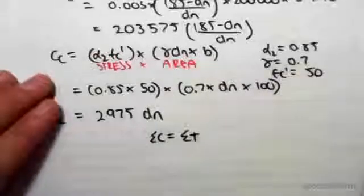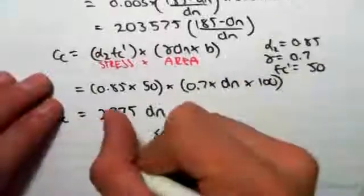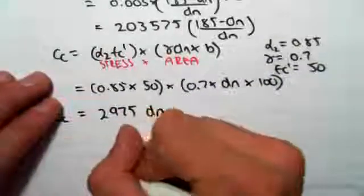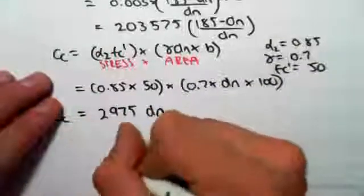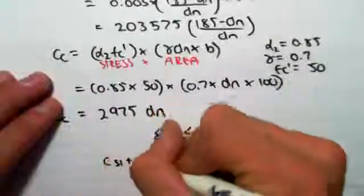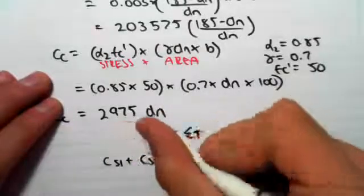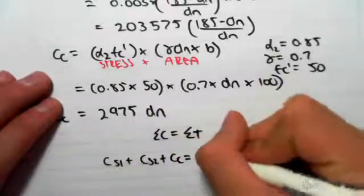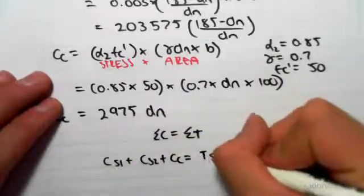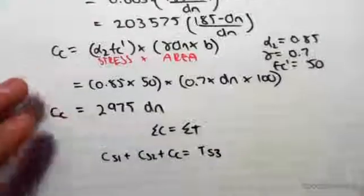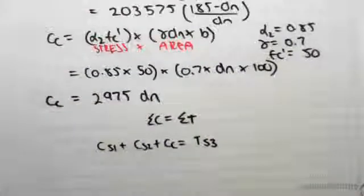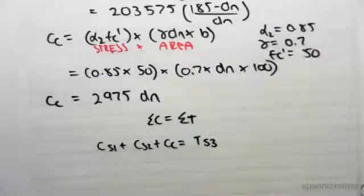So what that means is that the compression in steel layer one, plus the compression in steel layer two, plus the compression in the concrete will equal the tension in steel layer three. So subbing in for all these values.